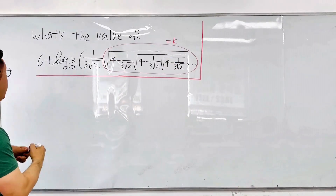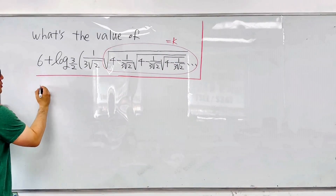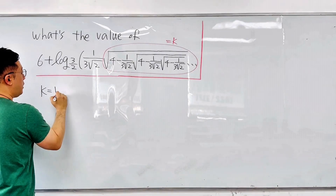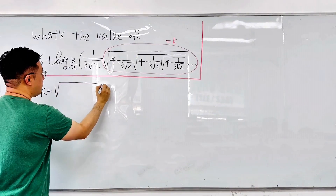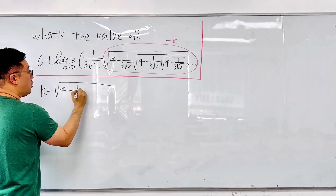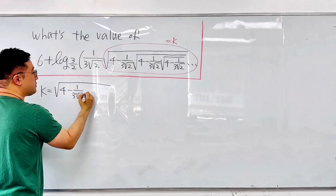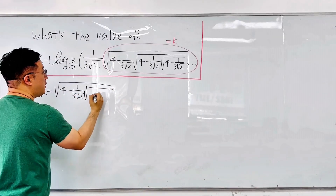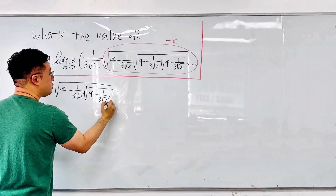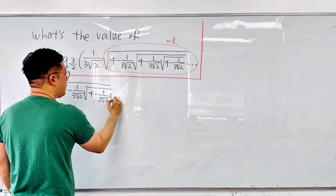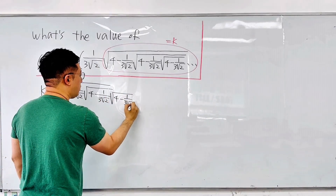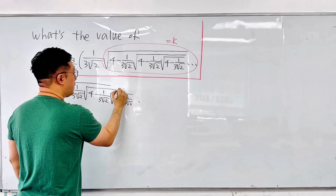That's why the first step: I'll be calling this infinite nested radical part just K. So K is equal to the square root of 4 minus 1 over 3√2 times the square root of 4 minus 1 over 3√2 times the square root of the same expression, and so on.